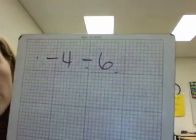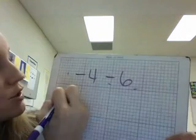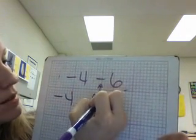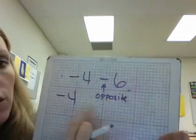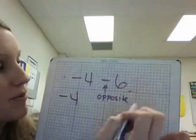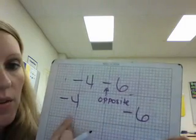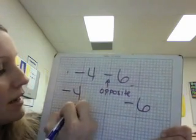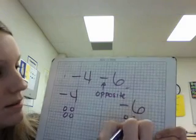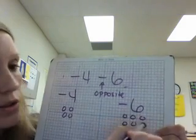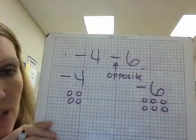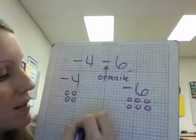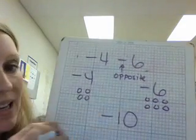Okay, negative 4 take away 6. So you want to look at this as you have negative 4 and then you do the opposite. So you're going to take away or do the opposite of positive 6 which would give you negative 6. You have negative 4 and negative 6. And so that it would be like 4 negatives and 6 negatives. So you'll notice you don't have any positives to cancel with the negatives. You need a positive and a negative to be able to cancel. So you've got 4 negatives, you have 6 negatives, you have 10 negatives.